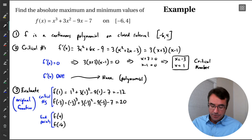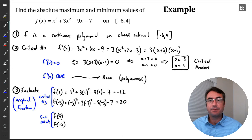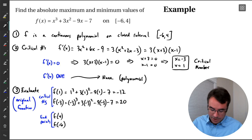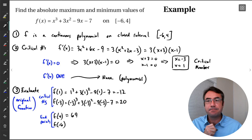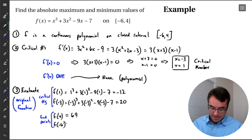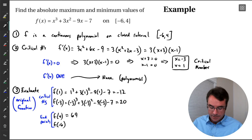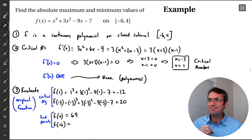Similarly, plugging x equals 4 into the original function gives us 69. And plugging in x equals negative 6 gives us negative 61.